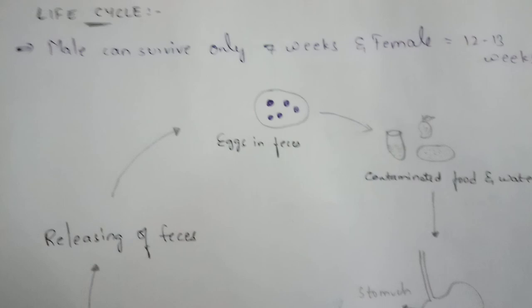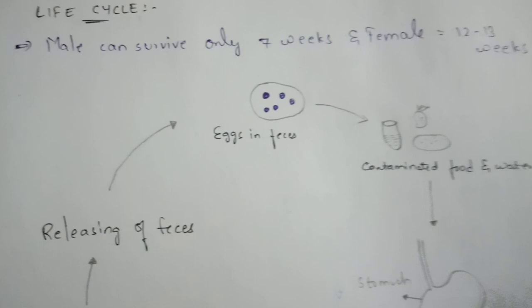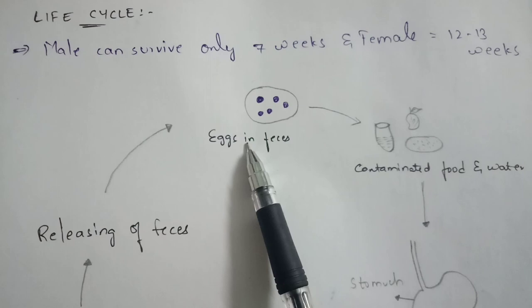Before starting the life cycle, one important point: the lifespan of the male worm is seven weeks, and the lifespan of the female worm is 12 to 13 weeks. The fecal matter released by humans contains eggs which are mainly released by the female pinworm.